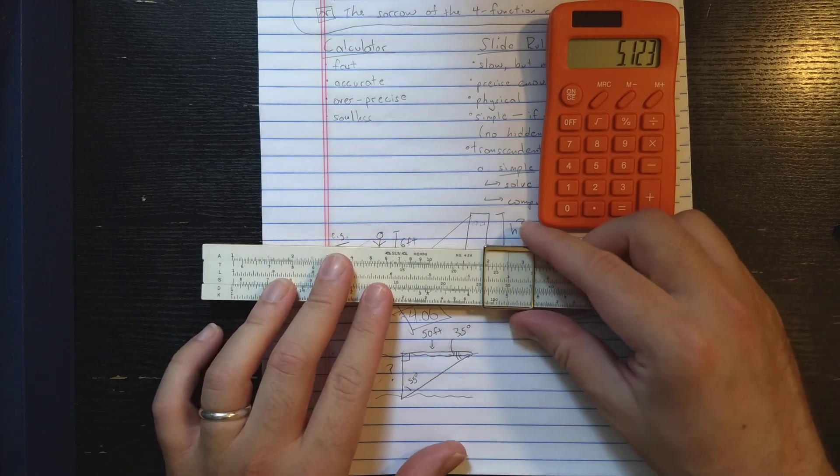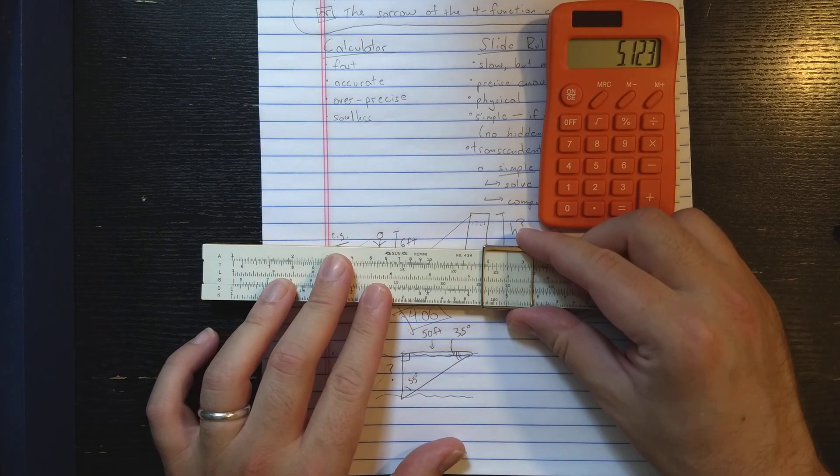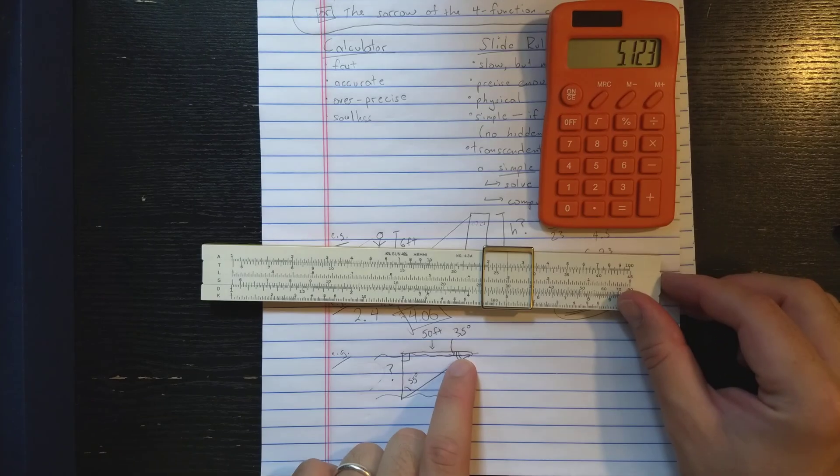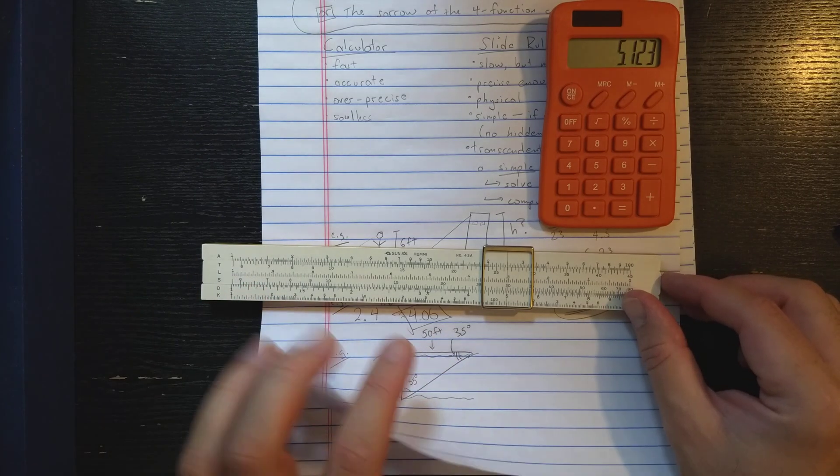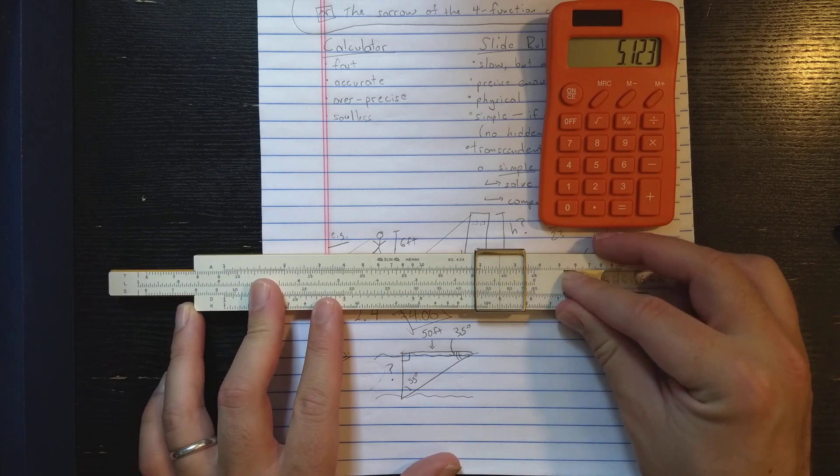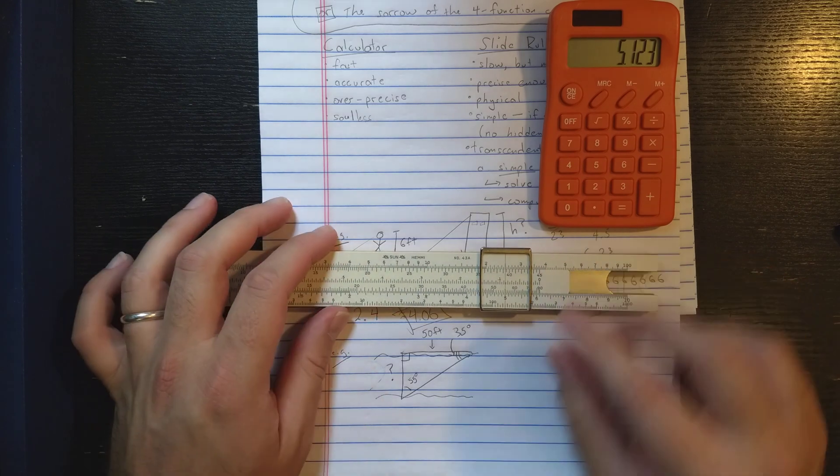So 50 feet, I'll find that on the D scale, under the sine of 35, or sorry, sine of 55 degrees. So I need to find 55 degrees on S. Align that. Then to find this, I'll find sine of 35 degrees by finding the 35 on S.